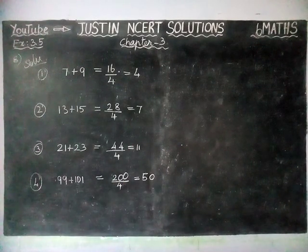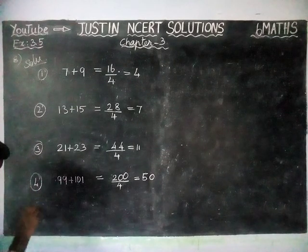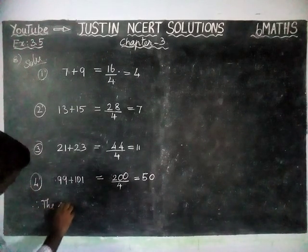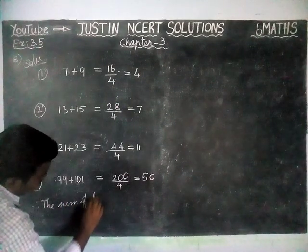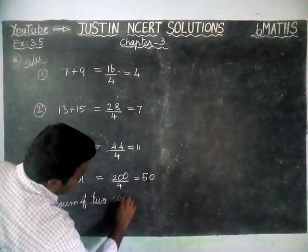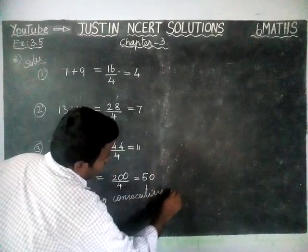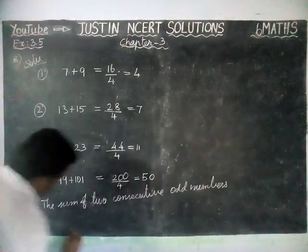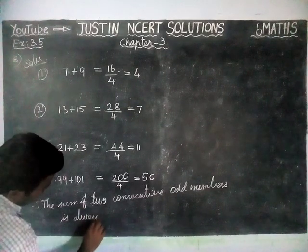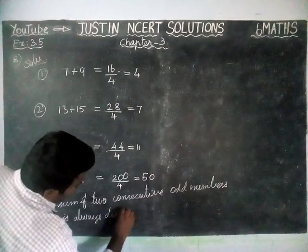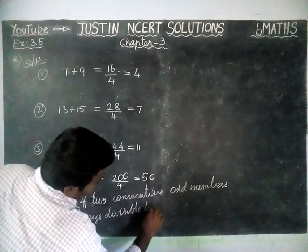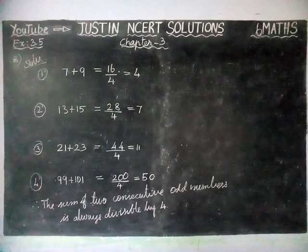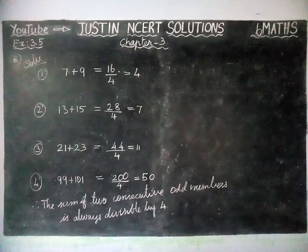Therefore, the given statement is true. The sum of two consecutive odd numbers is always divisible by 4. Thank you, students. Kindly give your suggestions in the comments box, share this video with your friends, and subscribe to our channel. Thank you.